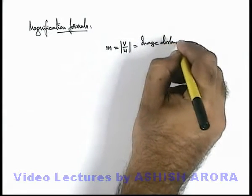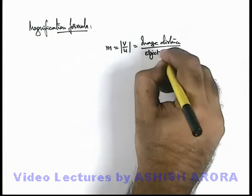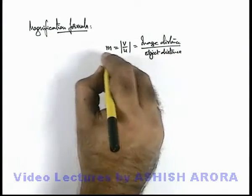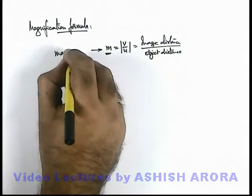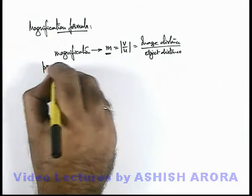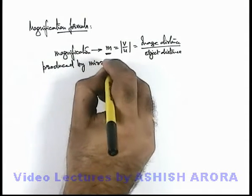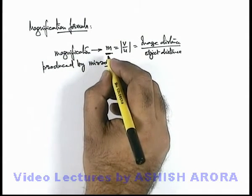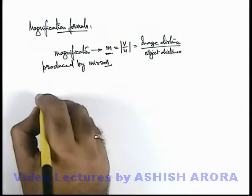Image distance by object distance. Here we're not using any sign convention, that's why we've taken the modulus. Now this m what we're getting is a term which we call magnification produced by mirror.